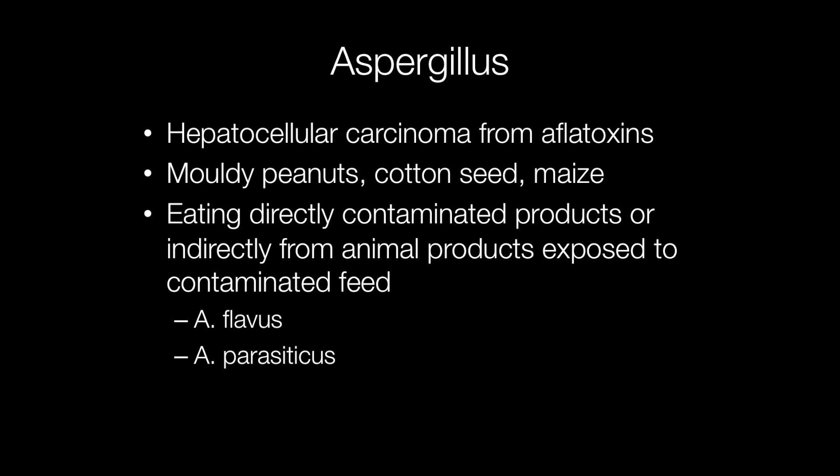If contaminated peanuts are eaten, this can result in exposure to aflatoxin and hepatocellular carcinoma developing. Another route by which aflatoxins can enter the body is by ingesting animal products such as meat or milk from animals that have grazed on contaminated feed containing aflatoxins.